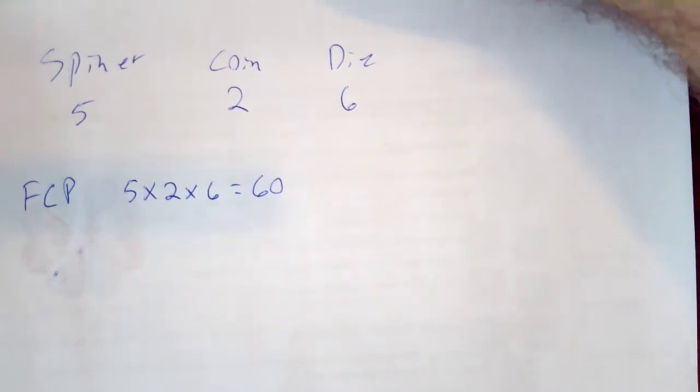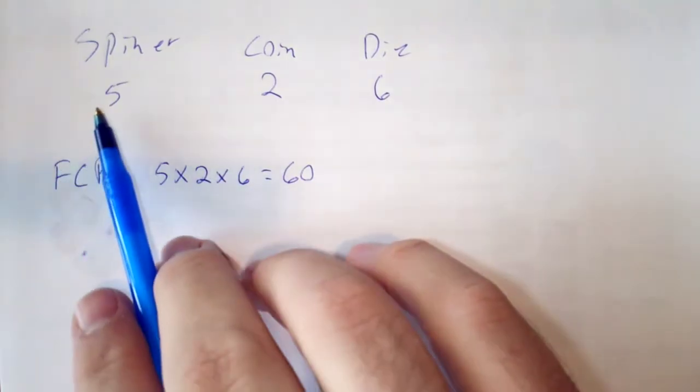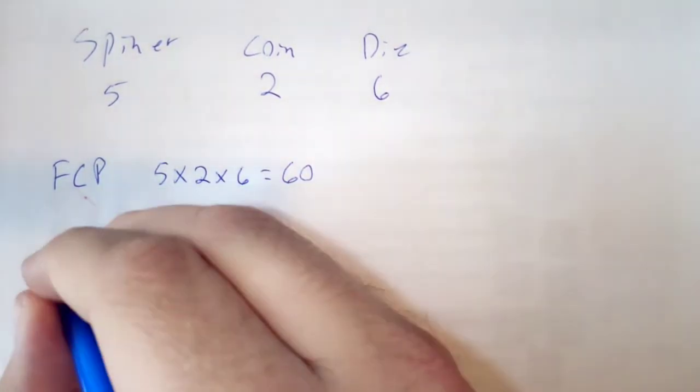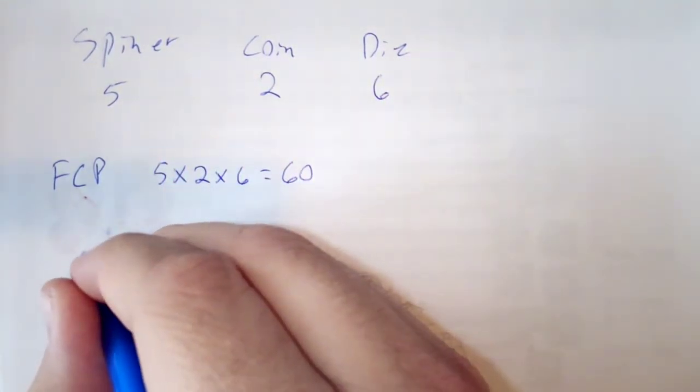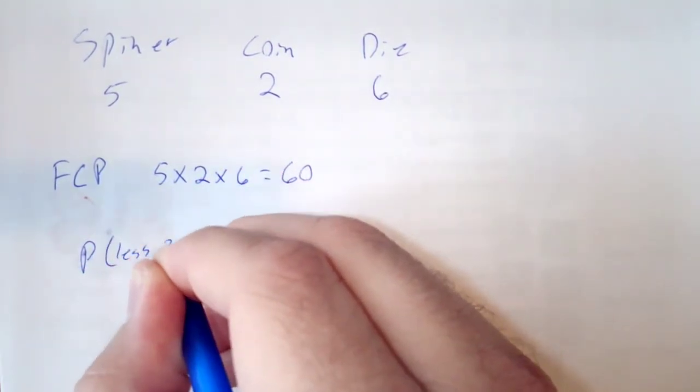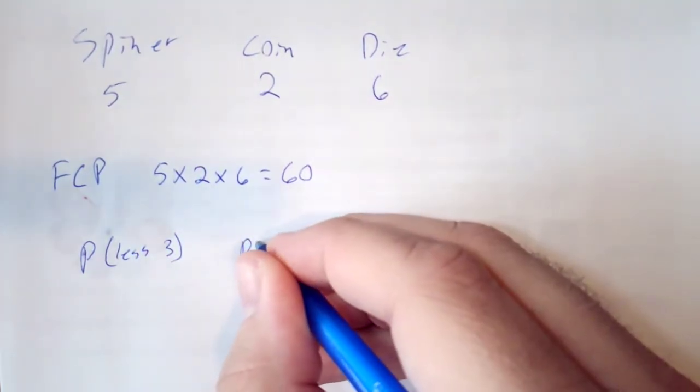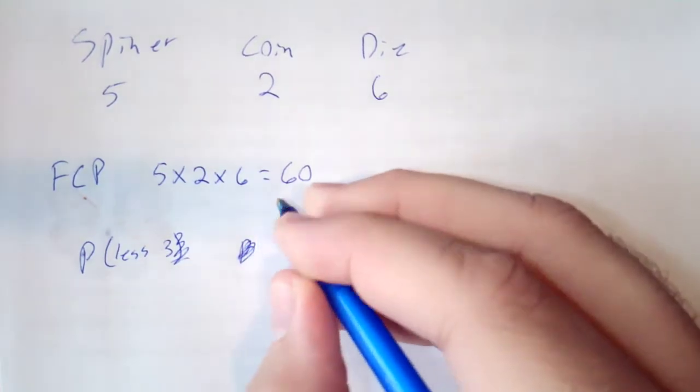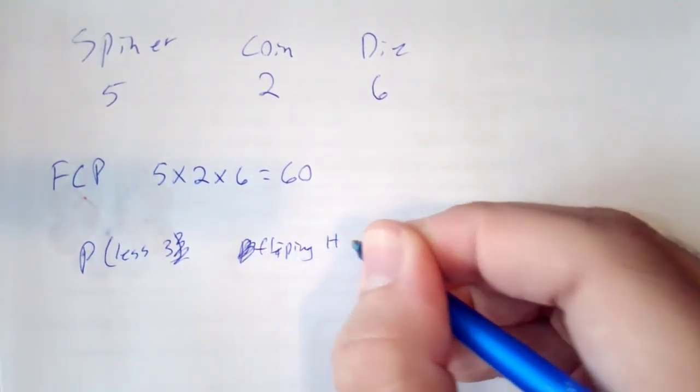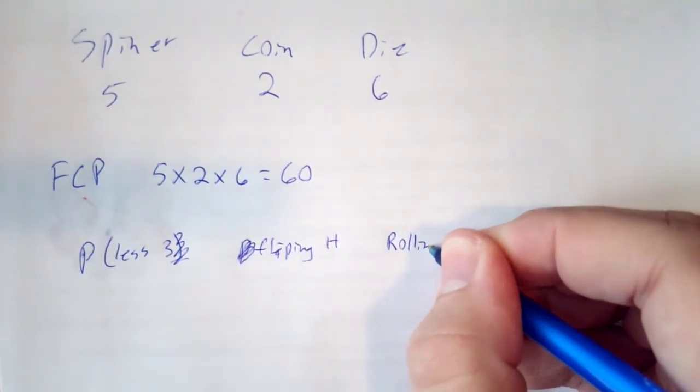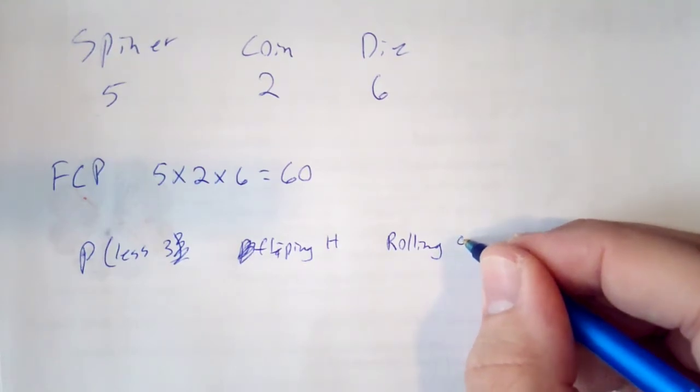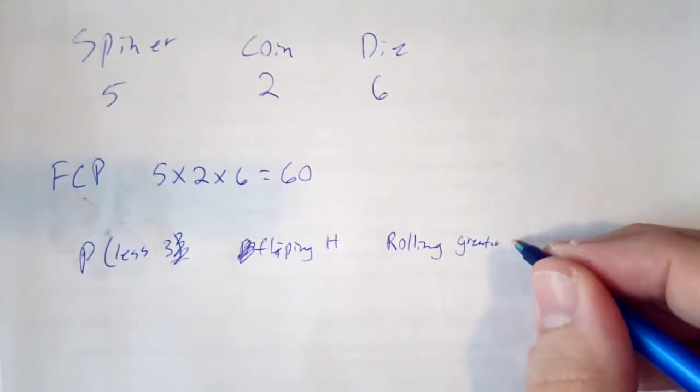We can also use our fundamental counting principle for finding out the probability of a certain event happening with each one of these. I want to know the probability of spinning less than 3, and then flipping heads, and then rolling greater than 4.